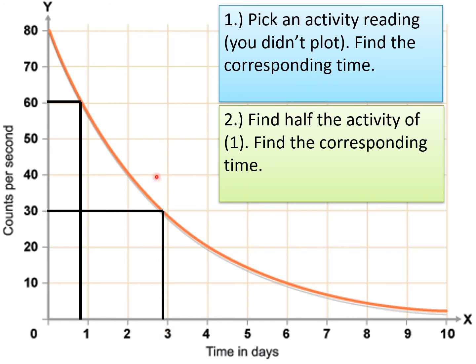The final step is: half-life will be the final time minus the initial time. So it would be 2.9 minus 0.9, which is about two days.